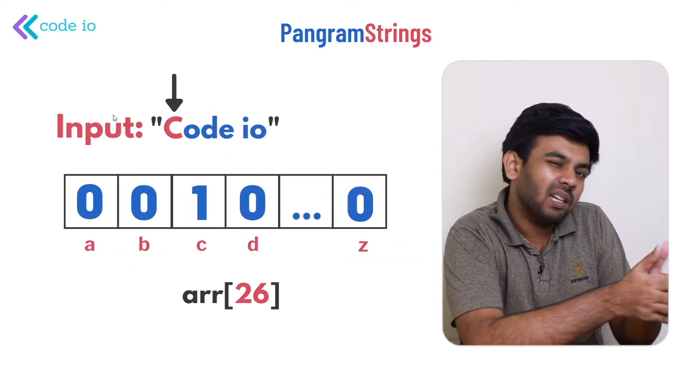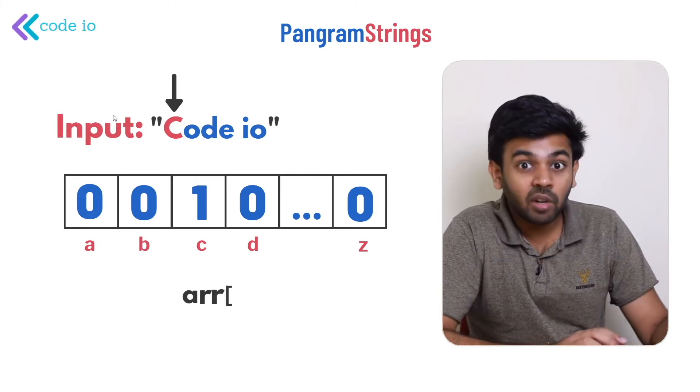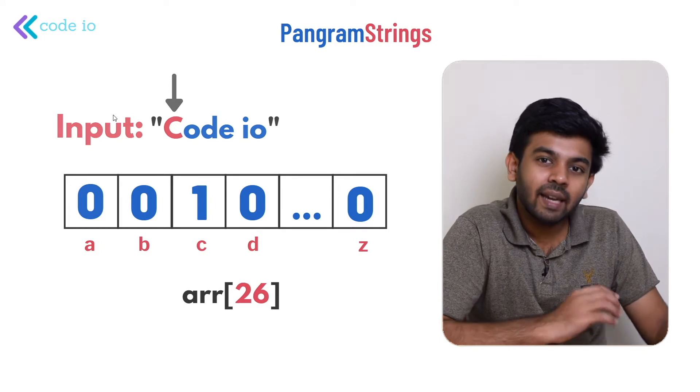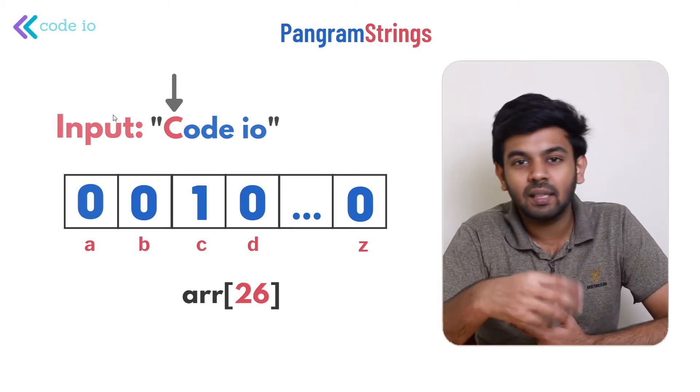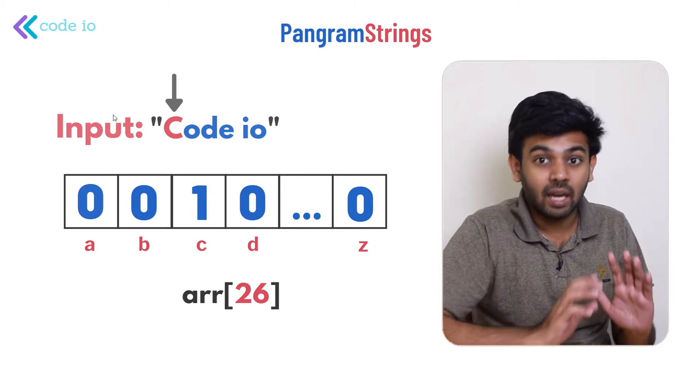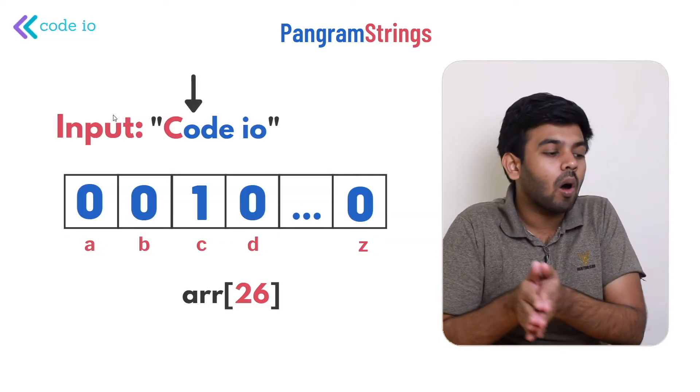Taking 'codeio' as an example: for the first character 'c', the second index — the third element in the array — will be marked as one, because 'c' is the third alphabet in the English language. This process is repeated for every character in the string. After traversal, we'll have an array of 26 elements: if the third element is one it means 'c' is present, if the fourth is one 'd' is present, and so on.